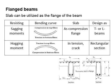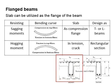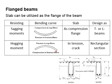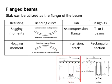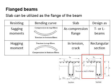This slab can be utilized as a part of the beam. It functions as the flange of the beam. A typical flange beam comprises a reinforced concrete beam plus a section of the slab. It can be in the form of a T-shape or in the form of an L-shape.